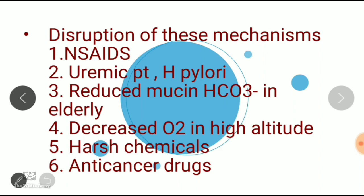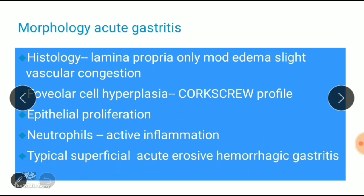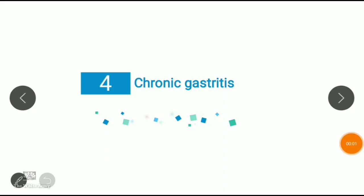In acute gastritis, histologically the lamina propria shows moderate edema and slight vascular congestion. Foveolar cell hyperplasia is seen, giving a corkscrew profile — epithelial proliferation as a feedback protective mechanism. There is presence of neutrophils indicating acute inflammation, and in severe cases erosions and hemorrhages may be present.